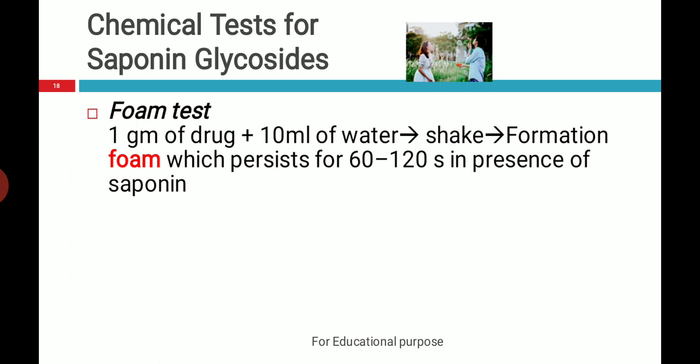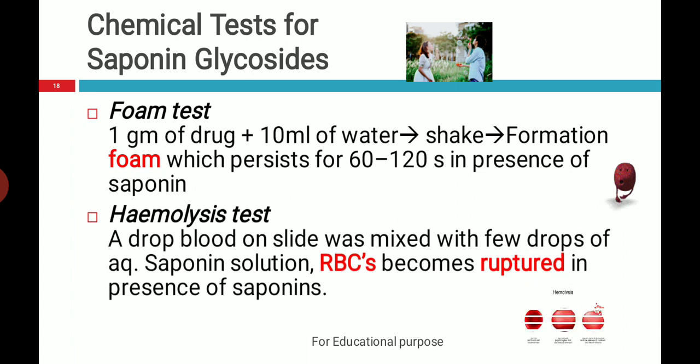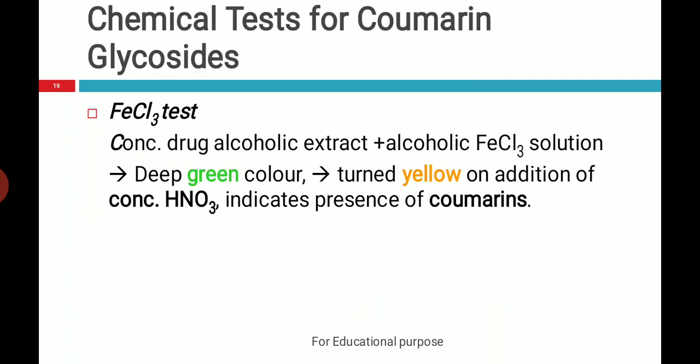Another test is also simple. Take a glass slide, add one drop of blood and a few drops of aqueous saponin solution, then mix it. You will observe that the RBCs get ruptured in the presence of saponin because of its surfactant action. You can take a control slide and a test slide — on the control add only blood, and on the test slide add blood plus saponin solution — and observe the difference visually or under a microscope.